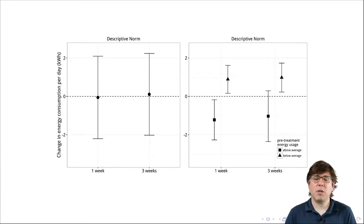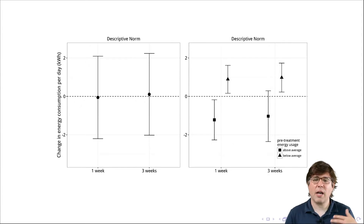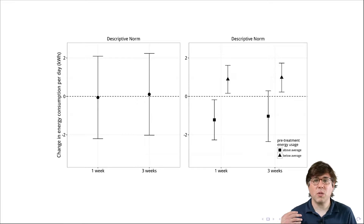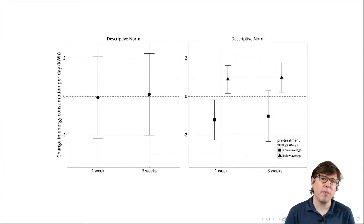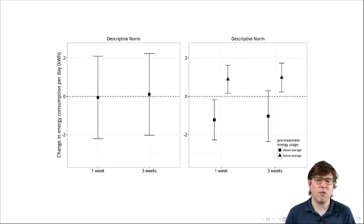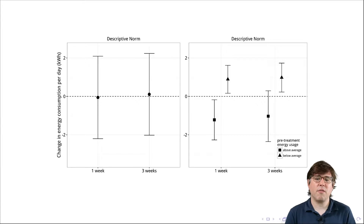On the one hand, people who used a lot of energy — more than their neighbors — decreased their energy consumption, as you might expect from theories of social norms. But they also found that people who used less energy than their neighbors actually increased their energy consumption, as if this information made them think they weren't using enough electricity. So what you see is an experiment that looks like it has no effect but is actually one where there are two offsetting effects in two different groups of people. This is an example of heterogeneity, where what looks like a non-effect is actually multiple effects being averaged together.